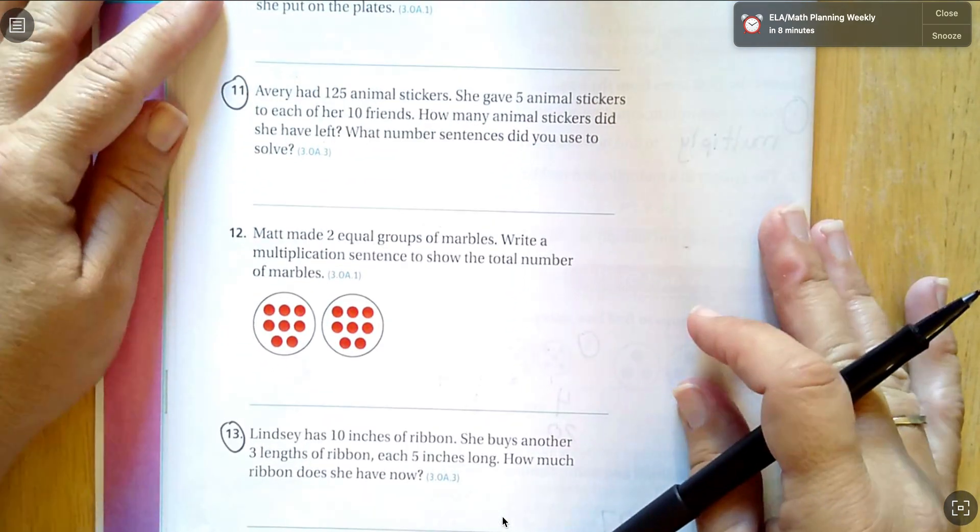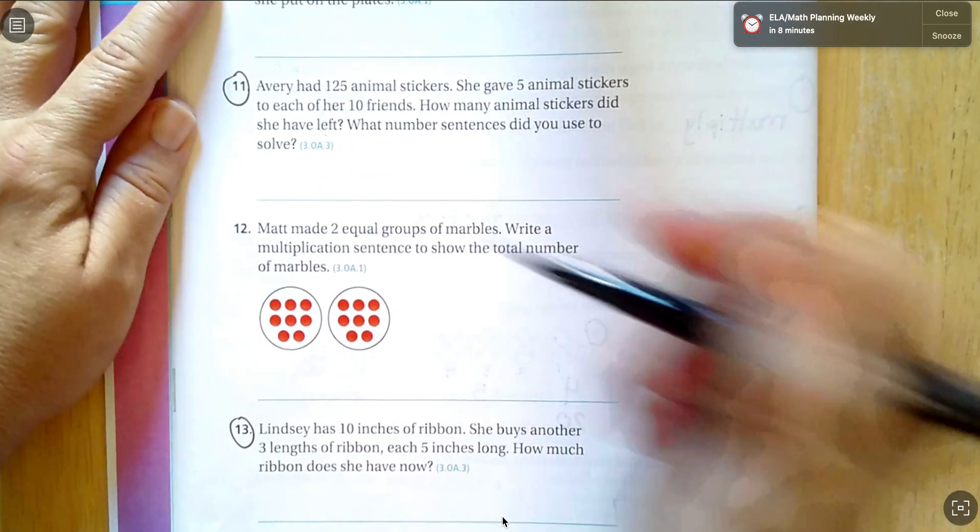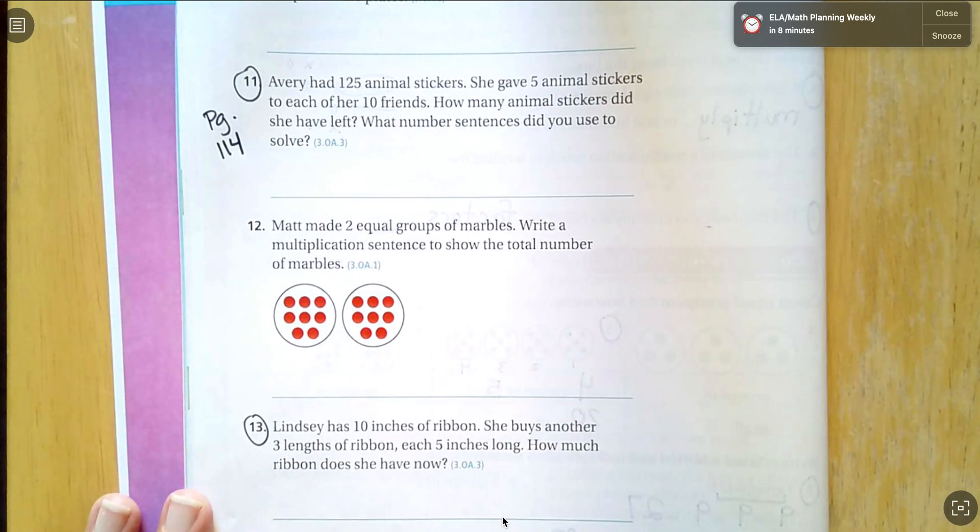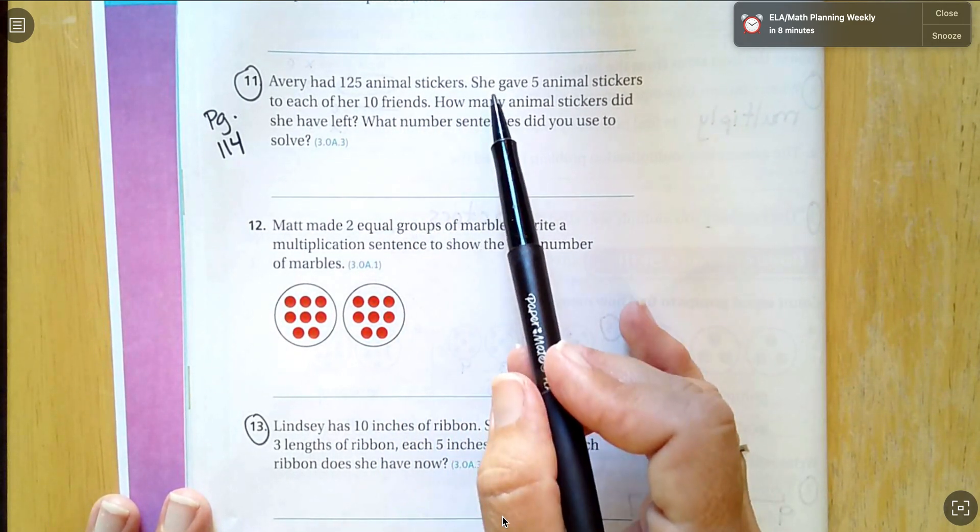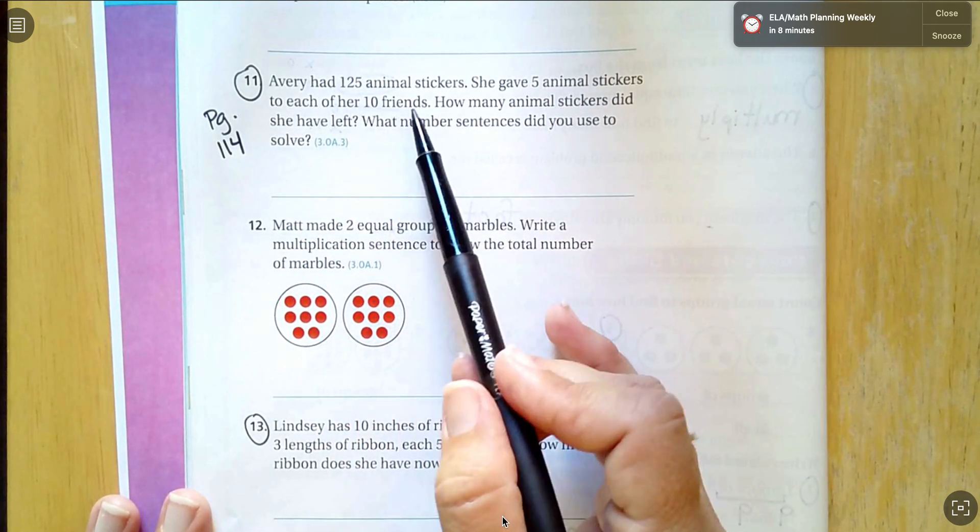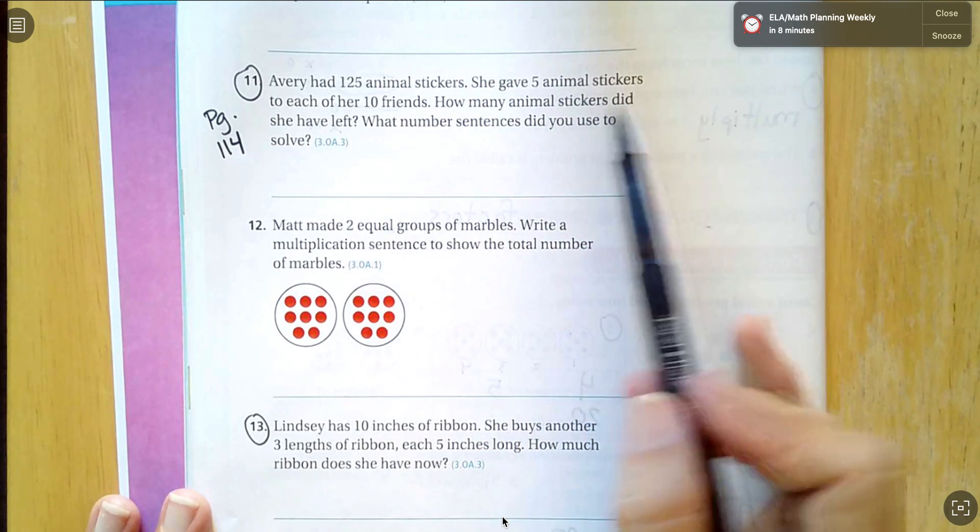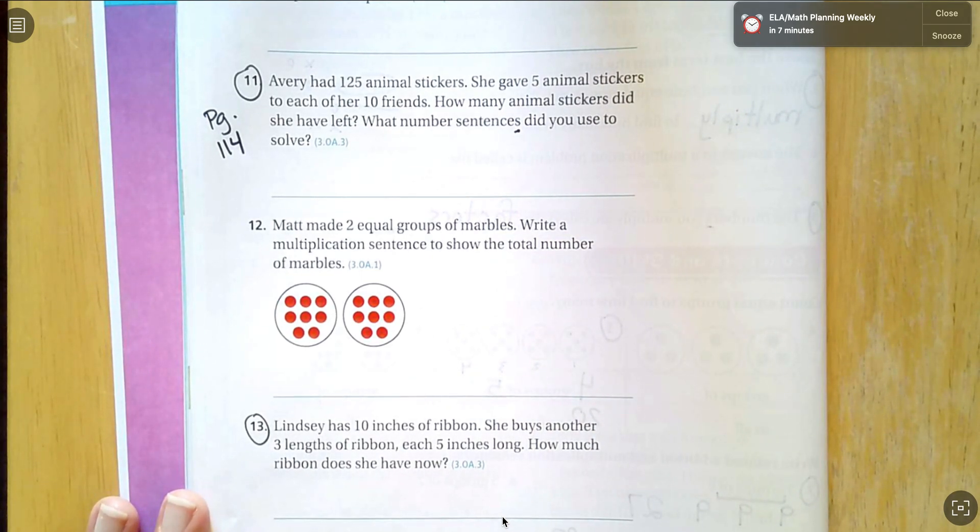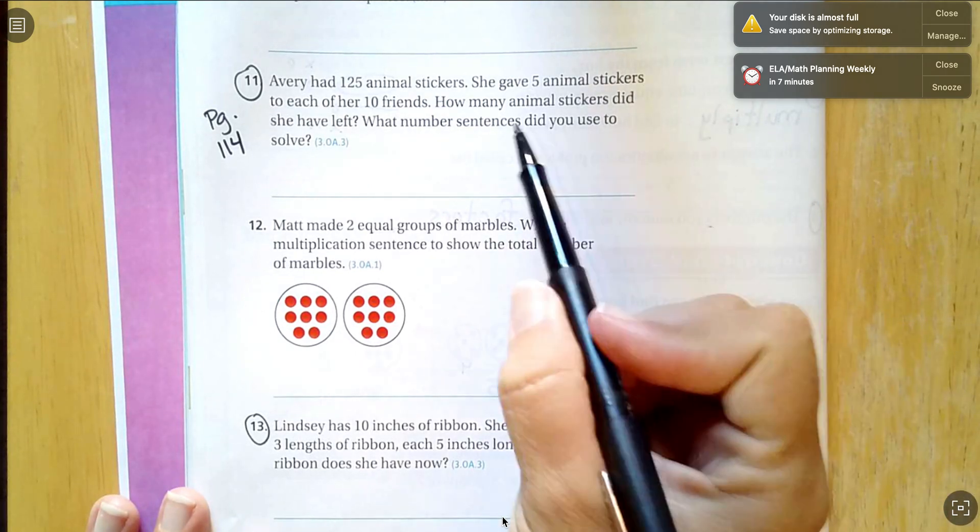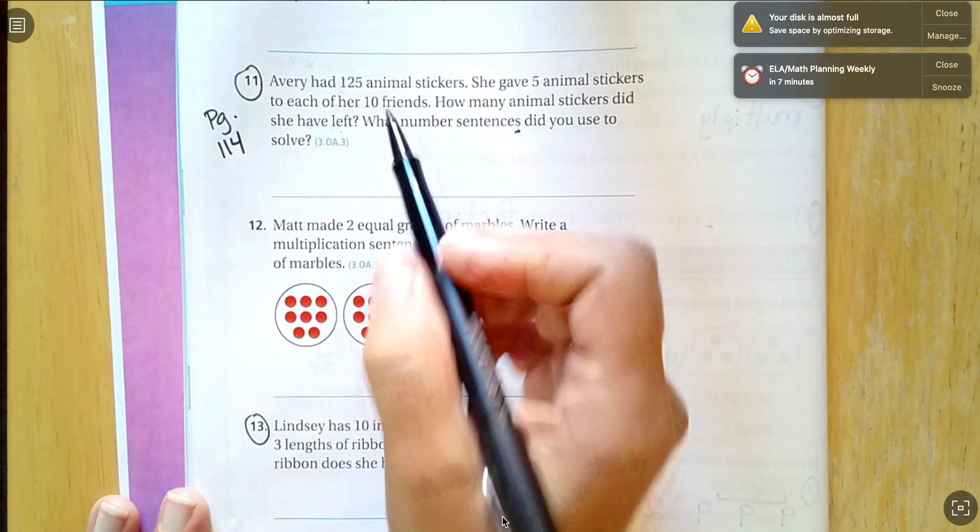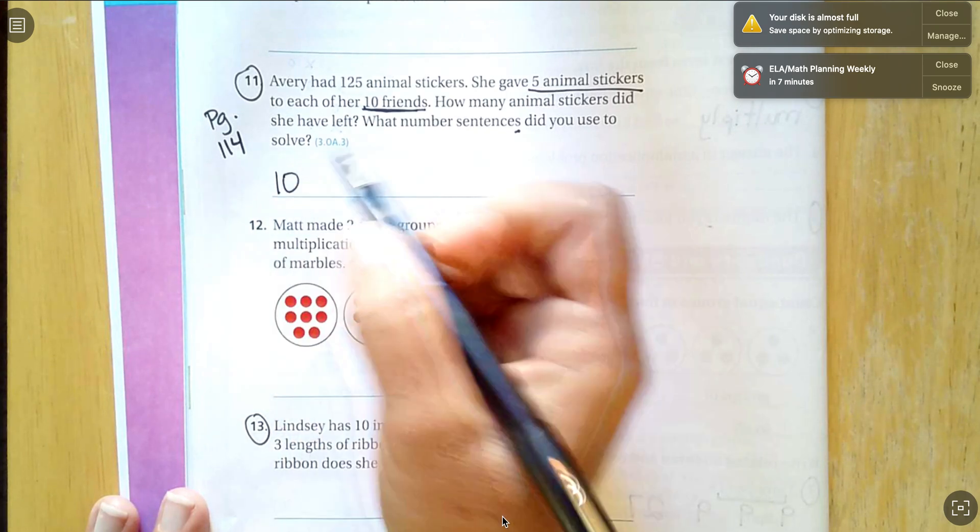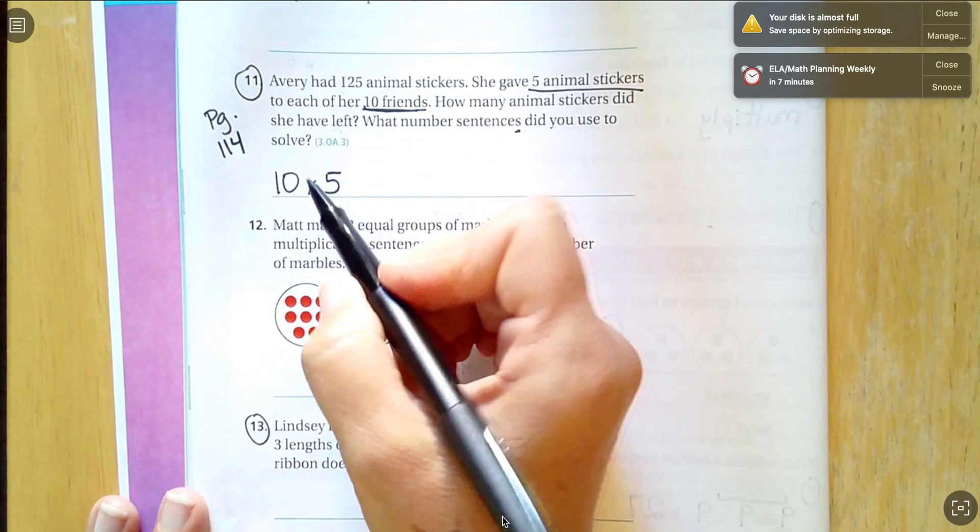Turning the page to page 114 on the back. So let's look at Avery. Avery had 125 animal stickers. She gave five animal stickers to each of her 10 friends. How many animal stickers did she have left? What number sentences did you use to solve? So I'm going to make more than one number sentence. First step, I need to know how many stickers she gave away. She gave away five to each of 10 friends.